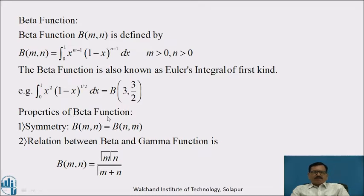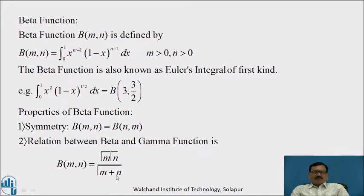Now we will see important properties of BETA Function. The first property is the symmetric property: BETA of MN is equal to BETA of NM. That is, if you interchange M and N, the value of the given integral remains the same. The next very important property is the relation between BETA and GAMMA Function: BETA of MN is equal to GAMMA of M into GAMMA of N divided by GAMMA of M plus N. First, we write the integral in terms of BETA Function, then use the relation between BETA and GAMMA Function to express BETA in terms of GAMMA, and making use of the properties of GAMMA Function, we can evaluate the integral.